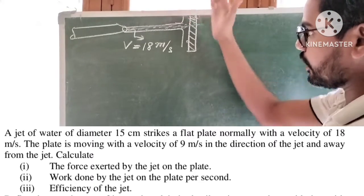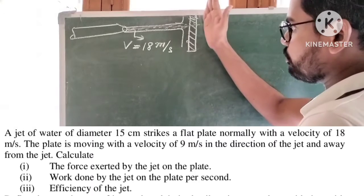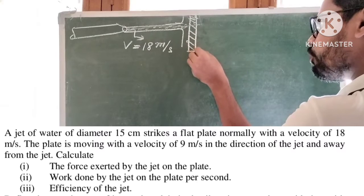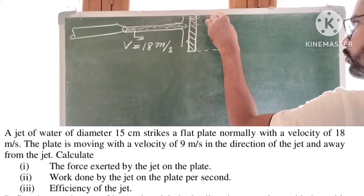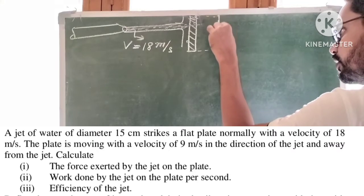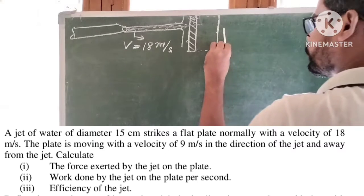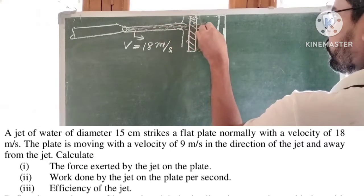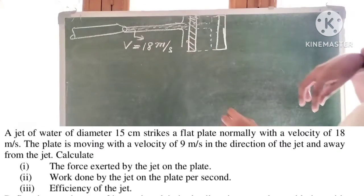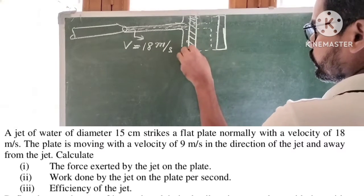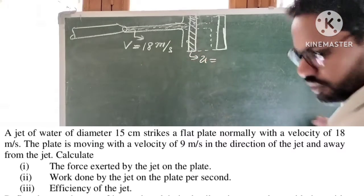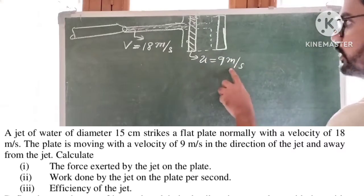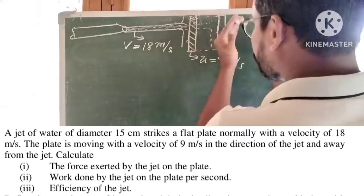There is a vertical plate, oriented normal to the direction of the jet — that is, perpendicular to the jet's direction. This is a moving plate. Suppose this is the final position of the plate. The plate is moving with velocity U equal to 9 m per second.